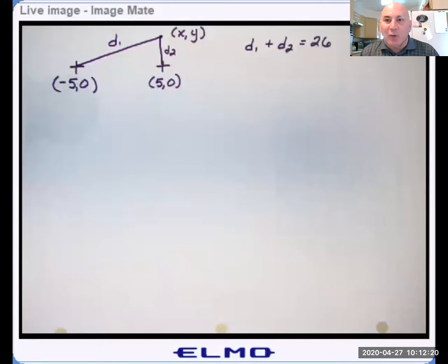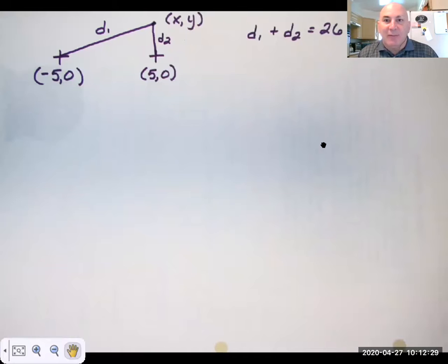The problem I gave you said that if we have two fixed points, the focal points, at 5 and negative 5, 0, and the sum of the focal radii is 26. What is the equation of the ellipse?